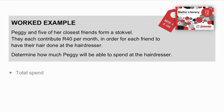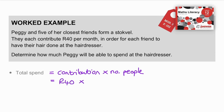Let's look at a worked example. Peggy and five of her closest friends form a stokvel. They each contribute R40 per month in order for each friend to have their hair done at the hairdresser. To determine how much Peggy will be able to spend, the total spend is the contribution each person made times the number of people. The contribution is R40, and the number of people is not five but six — Peggy plus five friends. So 40 × 6 = R240. When it's Peggy's turn, she will have R240 to spend at the hairdresser.